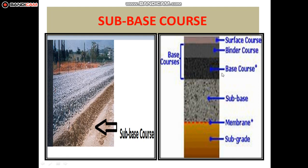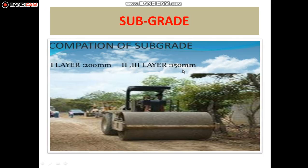Looking at the cross-section, the natural subgrade is at the bottom, over which we can see the subbase course, then the base course, which is a combination of base course and binder course, and above that the surface course. Subgrade is the top soil layer prepared to receive the stresses from the layers above. It is essential that the subgrade soil is adequately stable at all times.